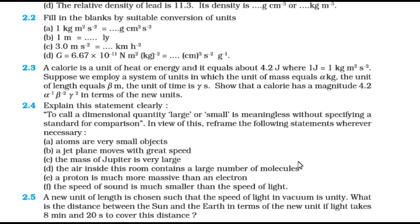So question number 2.4: Explain this statement clearly. To call a dimensional quantity large or small is meaningless without specifying a standard for comparison. In view of this, reframe the following statements wherever necessary: A) Atoms are very small objects. B) A jet plane moves with great speed. C) The mass of Jupiter is very large. D) The air inside the room contains a large number of molecules. E) A proton is much more massive than an electron. F) The speed of sound is much smaller than the speed of light.